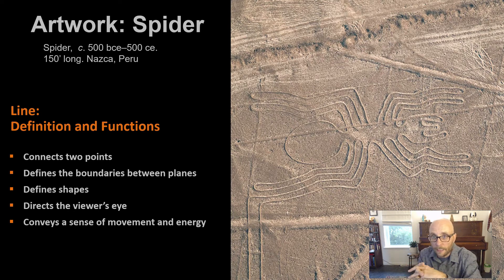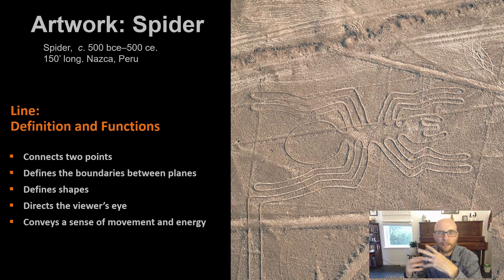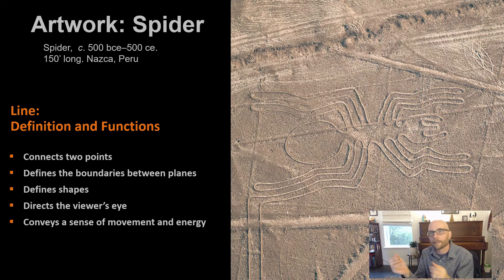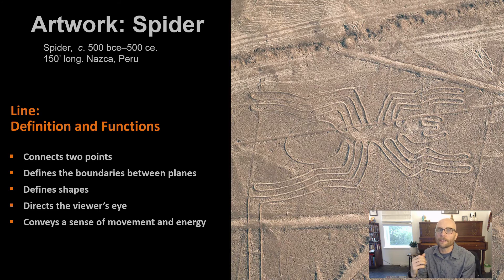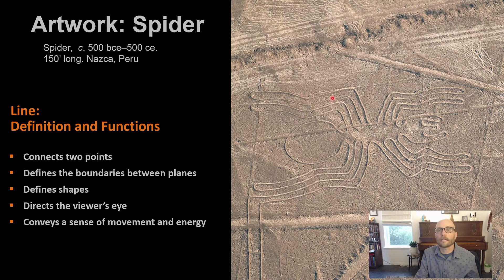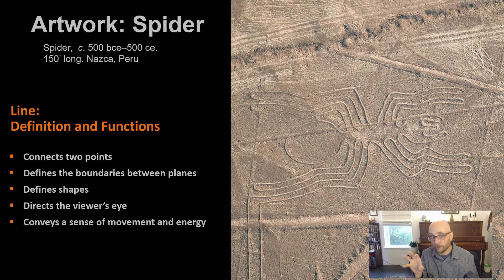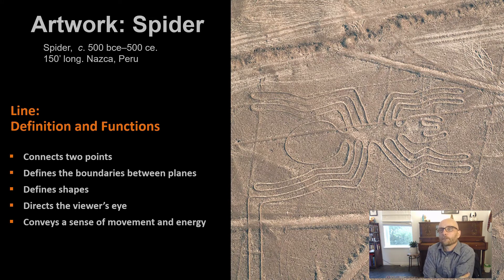Line is present in most images. At its very simplest, line is the connection between two points — you probably remember that from high school math. But a line can do other things: it can define the boundaries between planes, define shapes, direct our eye to where the artist or designer wants us to look, and convey a sense of movement and energy. Line can do a lot of things.